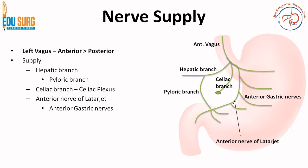So the left vagus becomes the anterior and right vagus becomes the posterior, but both have fibers from both left and right. Coming to the anterior vagus: it gives a hepatic branch which gives a pyloric branch supplying the pyloric sphincter, and a celiac branch which gives supply to the celiac plexus. After this, it gives the anterior nerve of Latarjet which gives multiple anterior gastric nerves. So this is the supply of the anterior vagus, which receives most of the fibers from the left vagus.